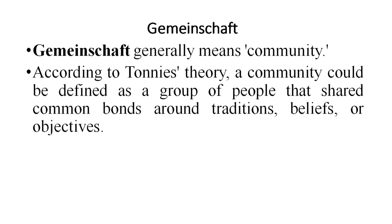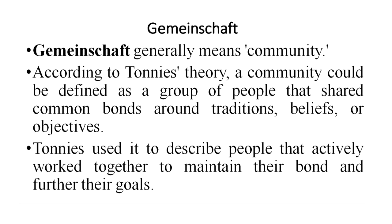A community may be a smaller one and a society is a larger one, so many communities can be part of one society. According to Tönnies' theory, a community could be defined as a group of people who have shared or common bonds around traditions, beliefs, and objectives. Tönnies used this to describe people that actively work together to maintain their bond and further their goals. Any member in a community has some community sentiment and common goals for the pursuit of community interests.